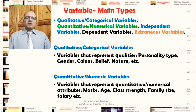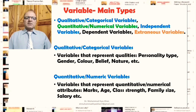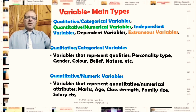Quantitative or numerical variables are variables that represent quantitative or numerical attributes of the research participants, sites, or phenomena. Examples include students' marks, age in terms of years, months, or days, class strength or number of students in a class, family size, and salary. These are examples of quantitative or numerical variables.